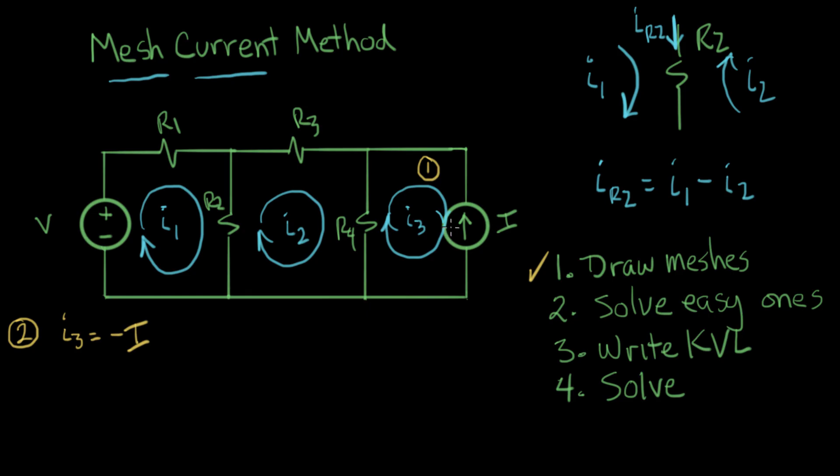Because they're pointing in opposite directions. But that's it, that's the easy one, we've done that. Now we get to the next step. Now let's start step three. We're going to write KVL equations on each of these meshes. We'll start here and go around this mesh in this direction and write Kirchhoff's voltage law. The first thing we come to is a voltage rise. We go in the minus side and out the plus, that's a voltage rise of V volts.